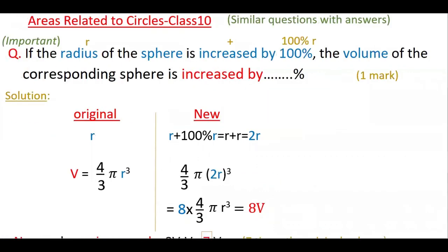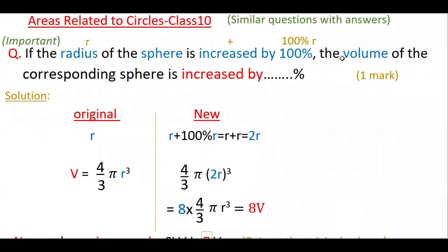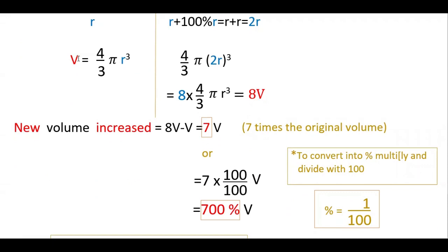The new volume is 8 times the original volume. But the question asks how much the volume is increased compared to the original. So you have to subtract the old volume from the new volume: 8v minus v equals 7v. So the volume increased is 7 times the original volume.